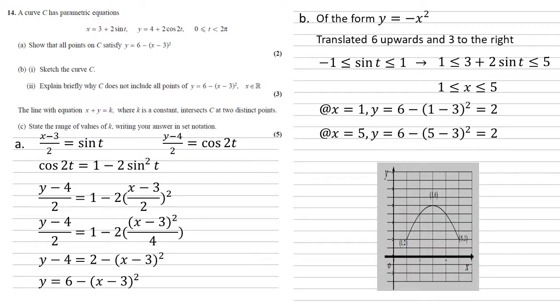Going from 1, 2 to 5, 2, upside down quadratic with a maximum at 3, 6.